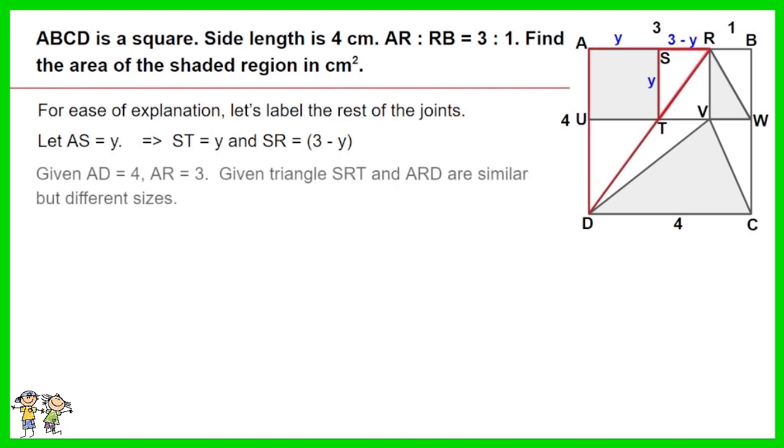Given AD equals 4, AR equals 3. Given triangle SRT and ARD are similar but different sizes. Thus SR to AR equals ST to AD. As such 3 minus Y over 3 equals Y over 4. Work out the equation. We have Y equals 12 over 7.